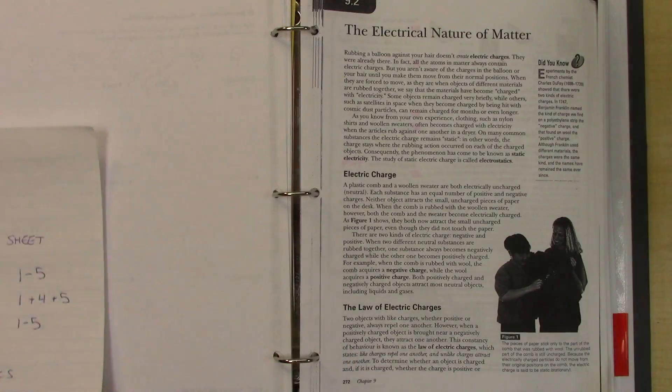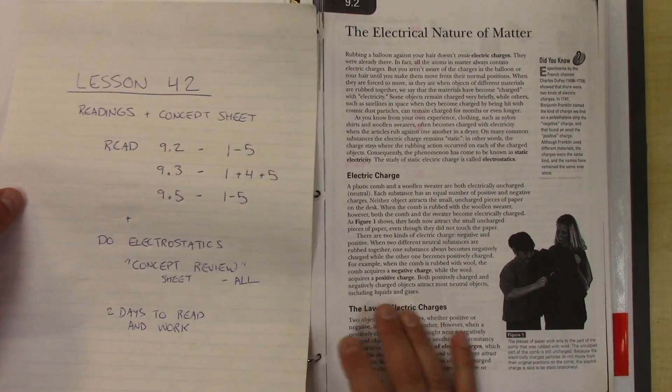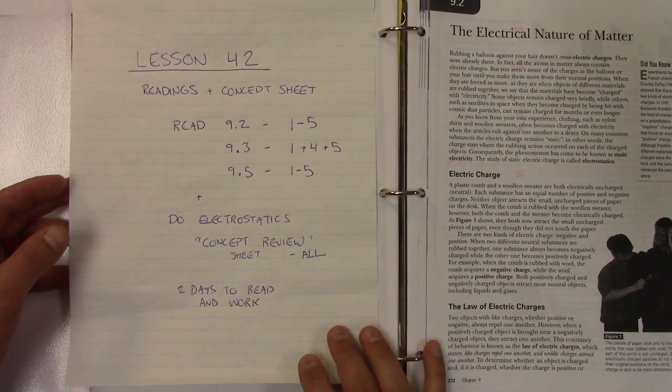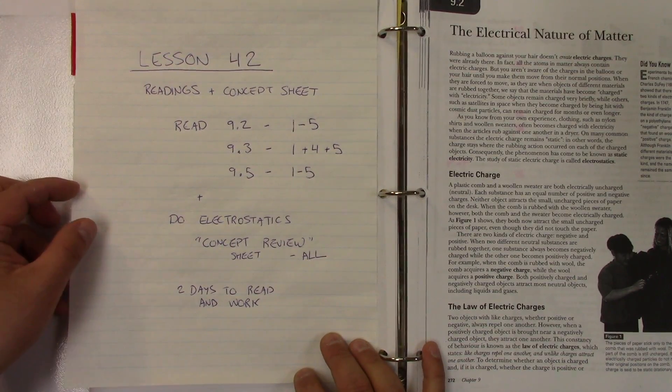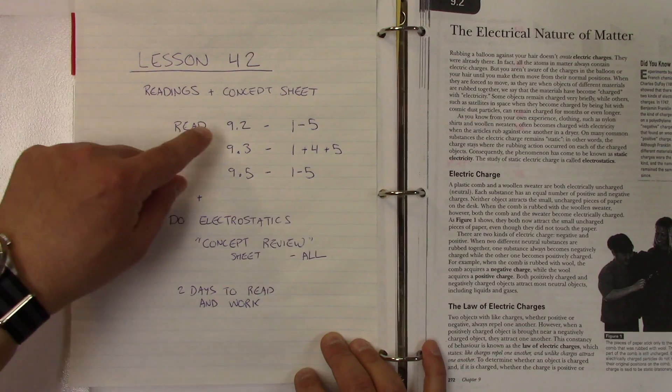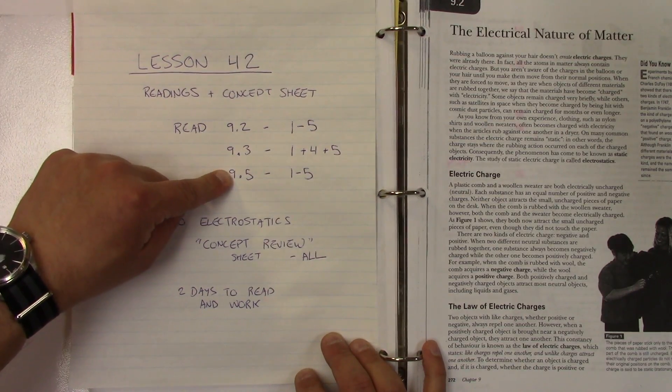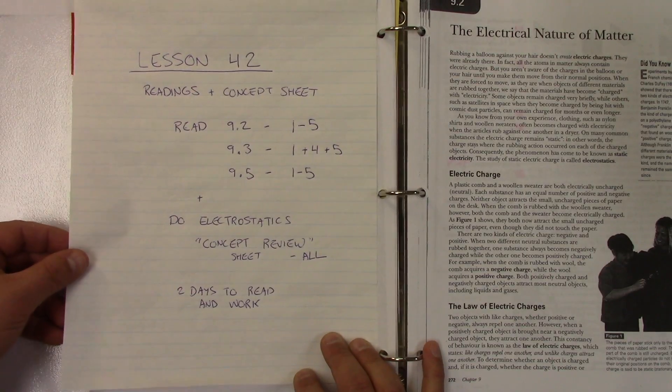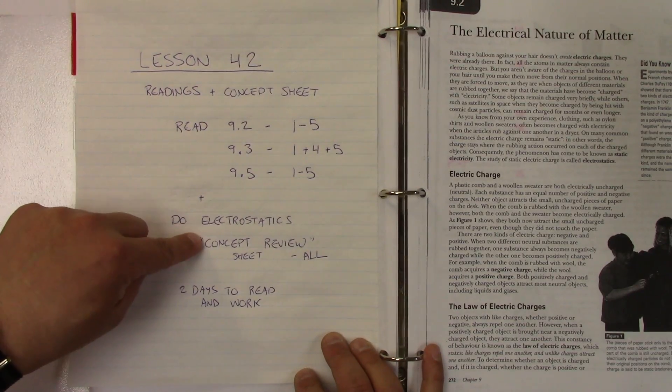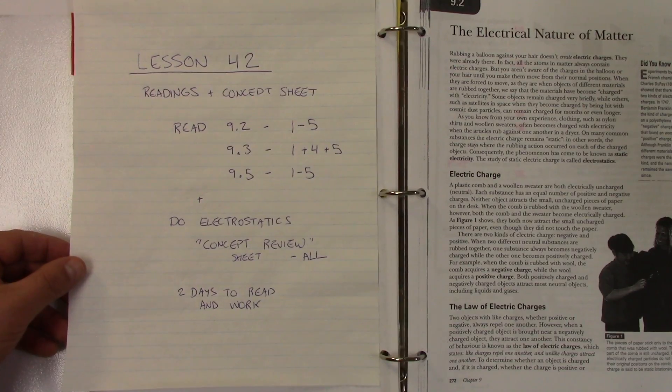So let's just take a look here. Down here, what you're going to do. If you want to pause it to write down what you need to do, I also have it on the classroom. You're going to do lesson 42, reading and concept sheet. You're going to read 9-2, 9-3, and 9-5, and those are the questions you're going to do. Then you're going to do the concept review sheet, and I'm giving you two days to do that. So this might be a little bit easier for you.